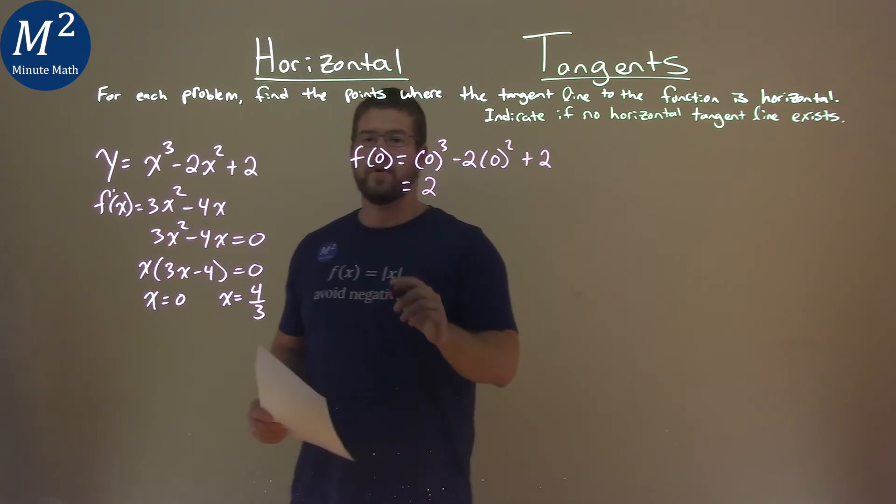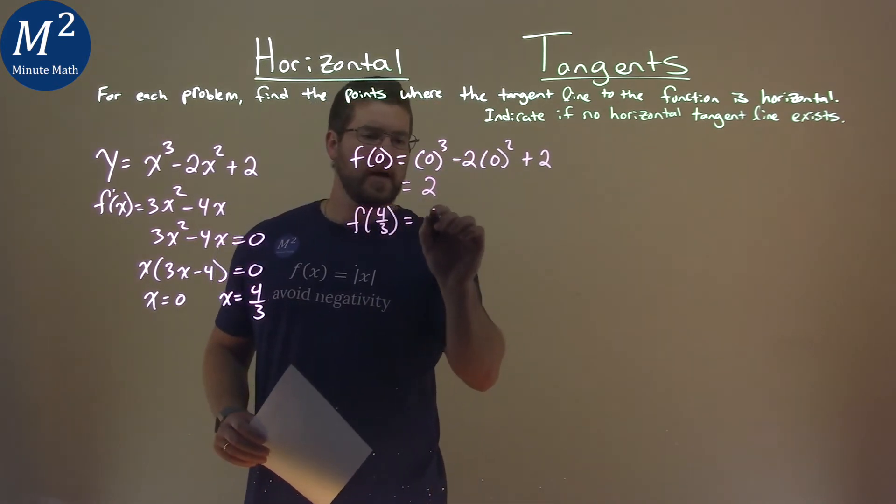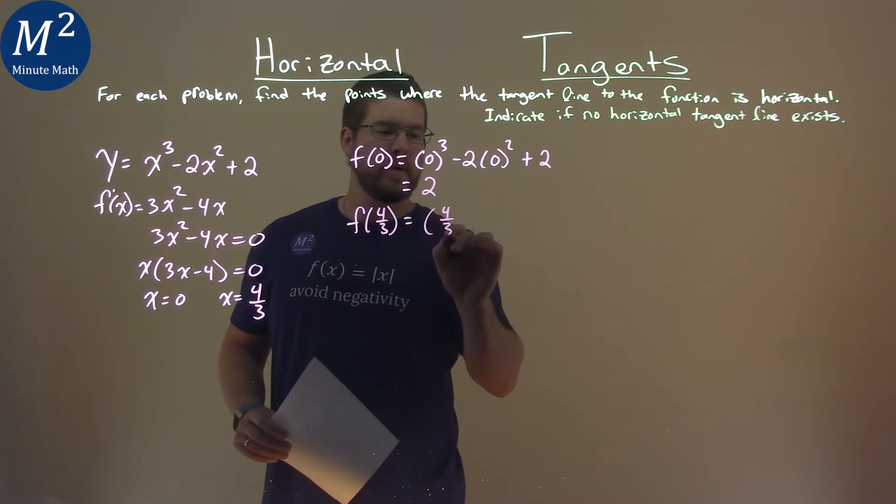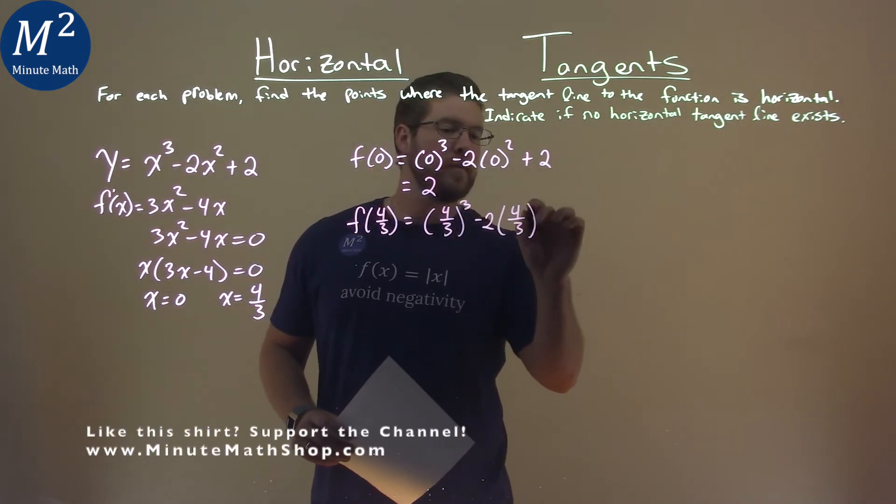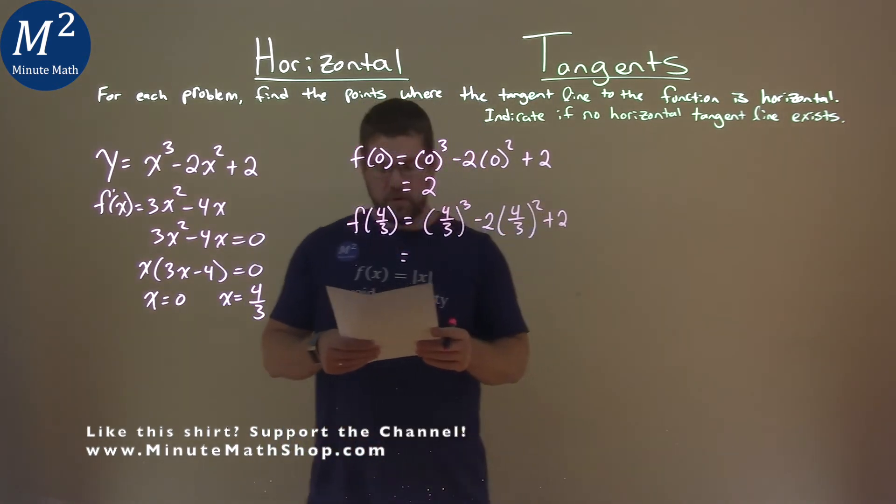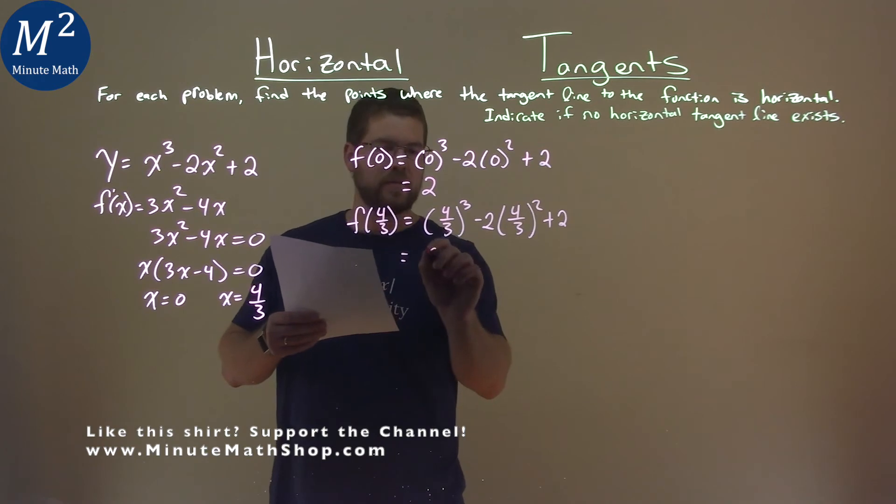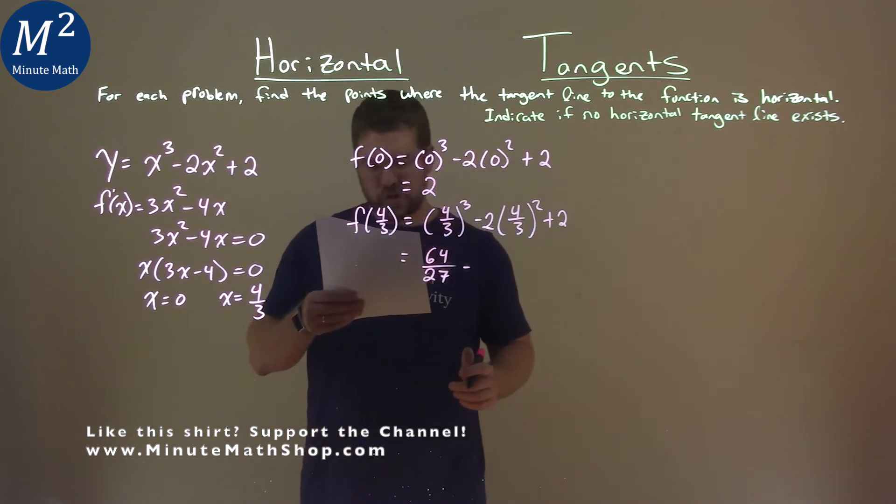Let's do it again with the 4 thirds. So let's go find f of 4 thirds here, and we have 4 thirds to the third power minus 2 times 4 thirds squared plus 2. Now I did the hard work for you. 4 thirds to the third power is 64 over 27 minus 4 thirds squared times 2 is negative,